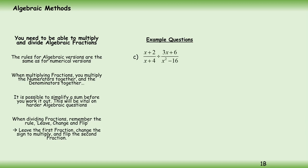This time we've got x plus 2 over x plus 4, so that's equal to x plus 2 over x plus 4. Divide, so we can turn that into multiplied by. We've got x squared minus 16 divided by 3x plus 6.